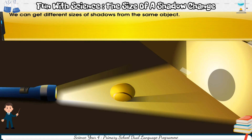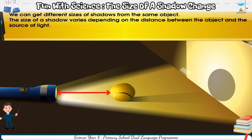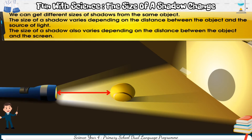We can get different sizes of shadows from the same object. The size of a shadow varies depending on the distance between the object and the source of light. The size of a shadow also varies depending on the distance between the object and the screen.